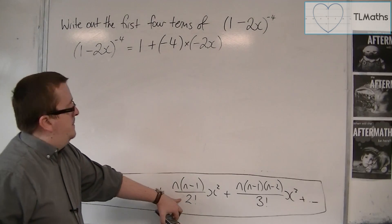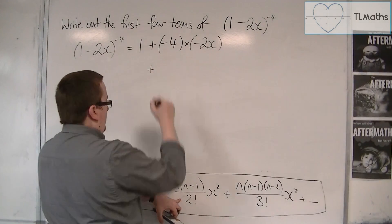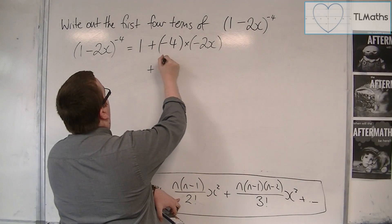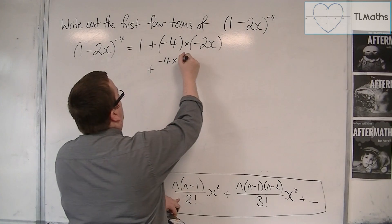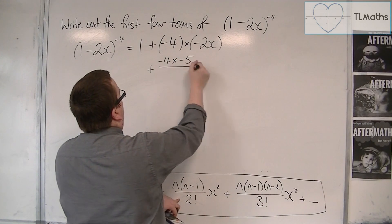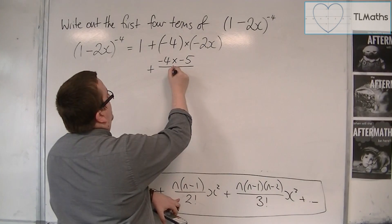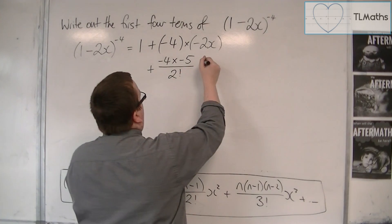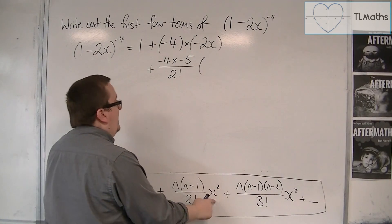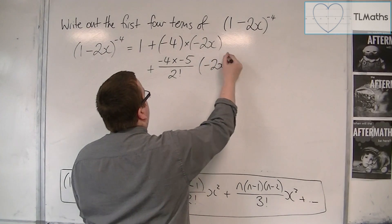Then we've got the next term. So plus n, that's -4, times -4 take away 1, so -5, over 2 factorial. 2 factorial is just 2, times x squared. Now each of the x's must be replaced with -2x,